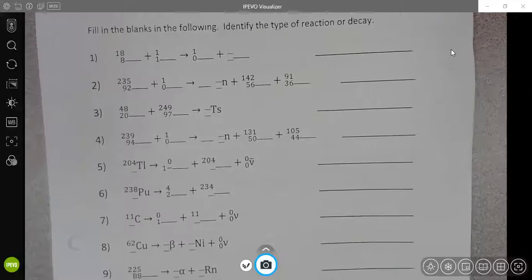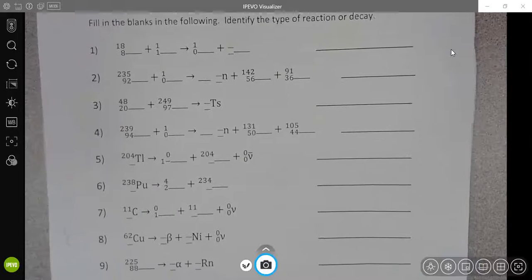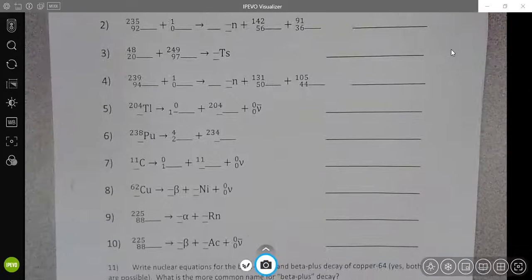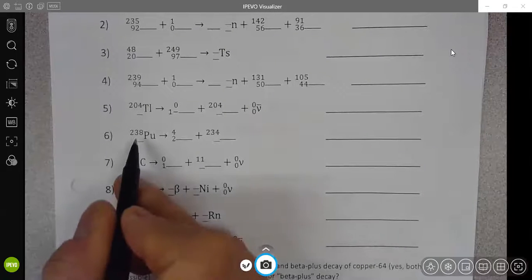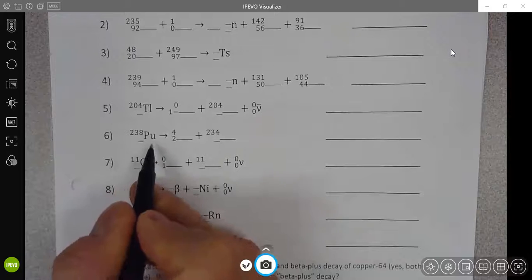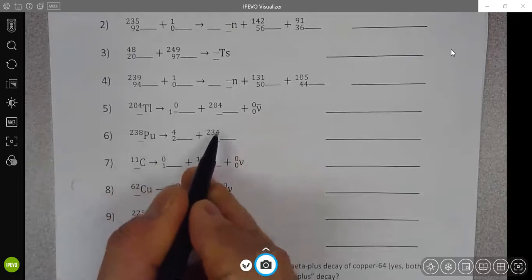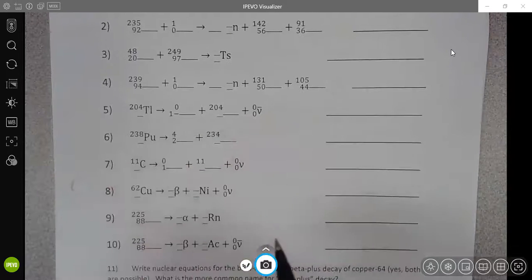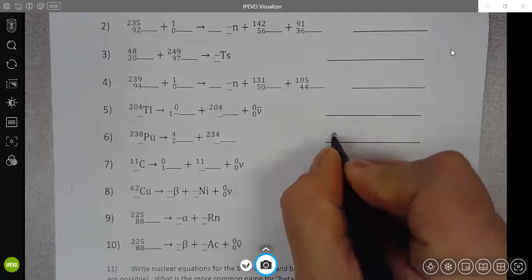So when you take a look at this worksheet and you look through all of these reactions and you're trying to identify types of reactions or decays, notice that here is a reaction where the mass number goes down by four. If the mass number goes down by four, then this is almost definitely going to be an alpha decay.